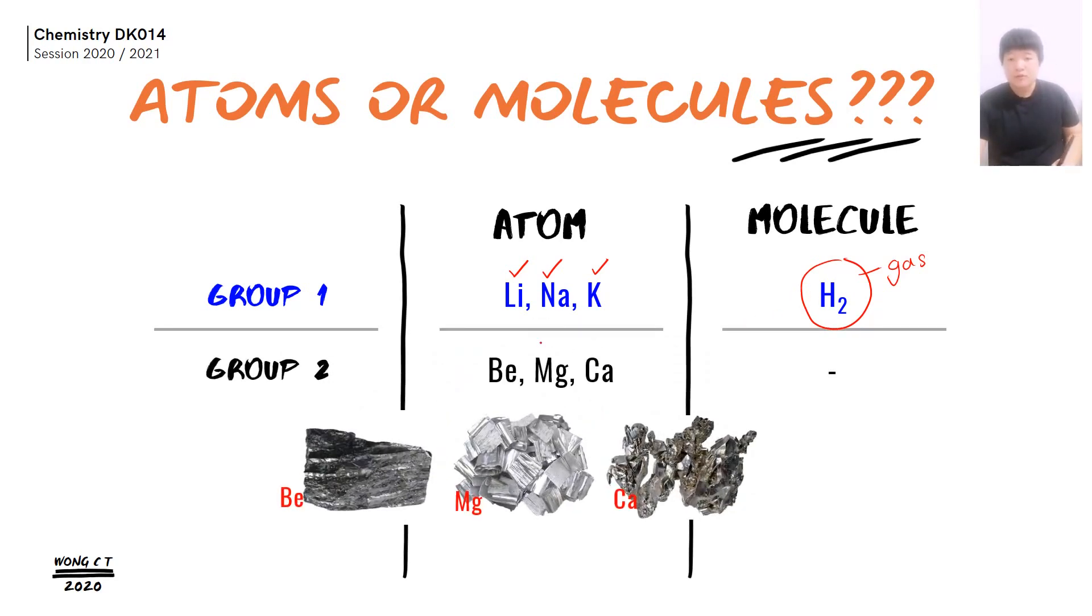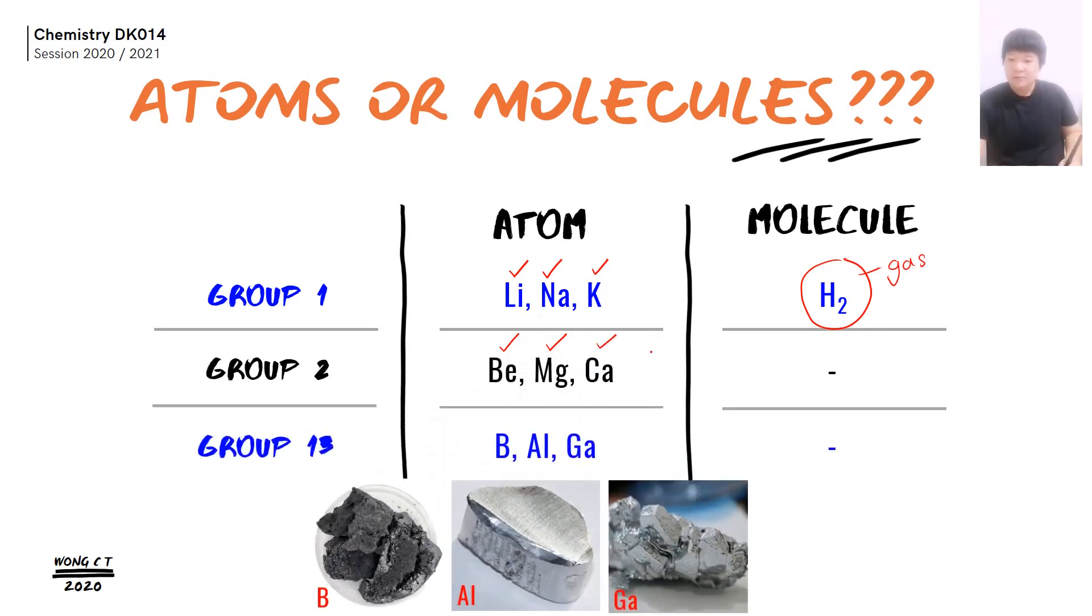Group 2 only exists in the form of atom. The example that we have is beryllium, magnesium, and calcium. Same goes to group 13, where group 13 elements only exist in the form of atoms, where we have boron, aluminium, galium.